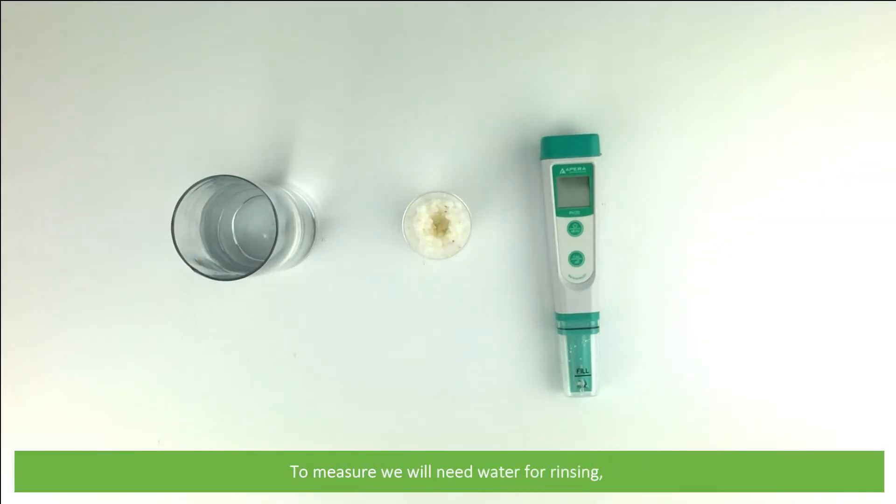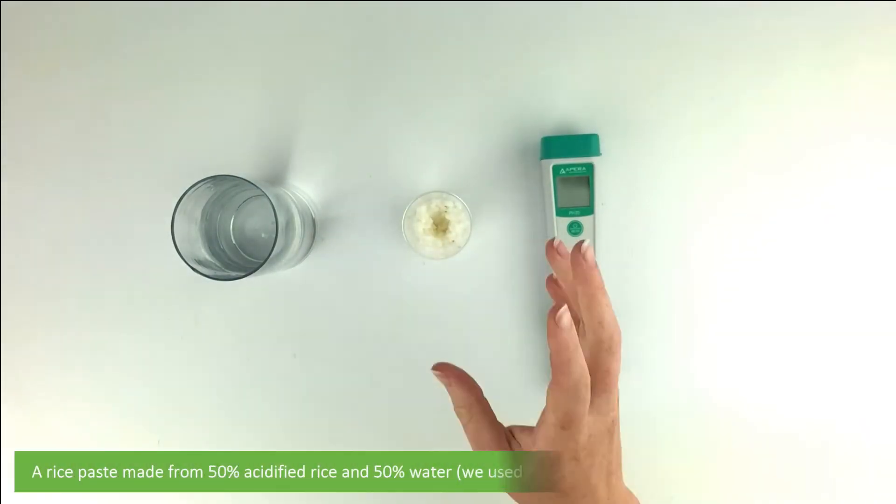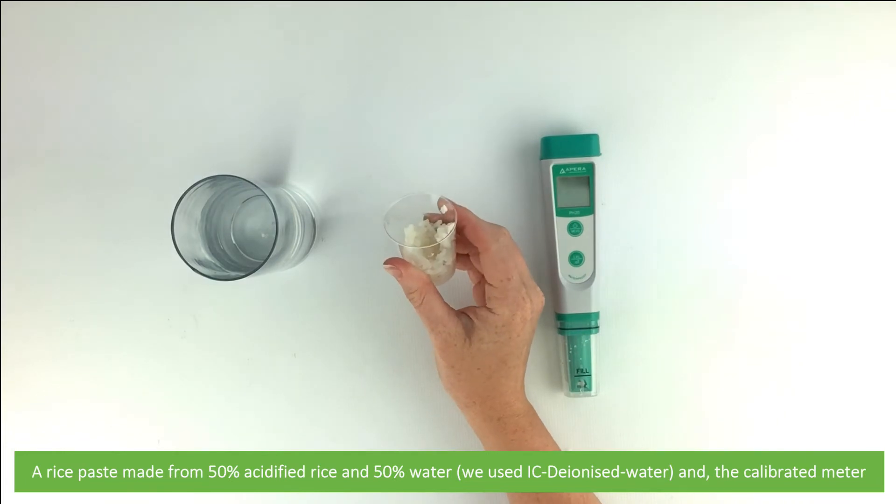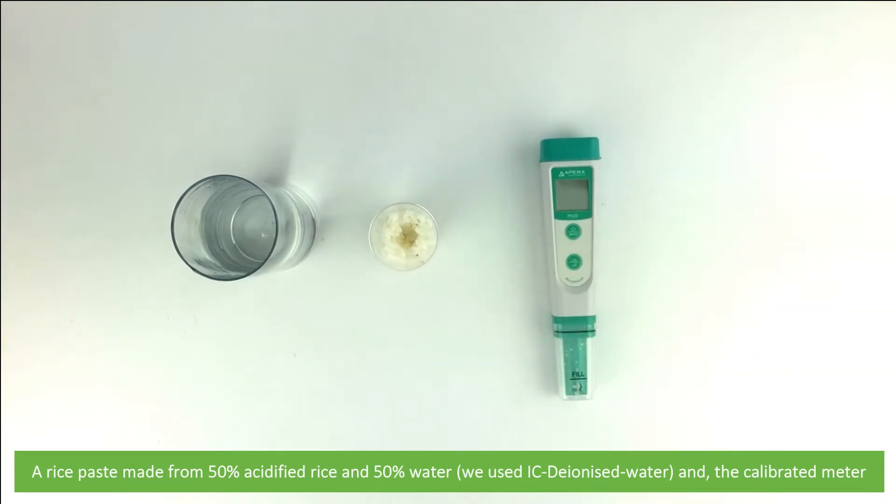To measure, we'll need water for rinsing - we use deionized water. A rice paste made from 50% acidified rice and 50% water. We use deionized water and the calibrated meter.